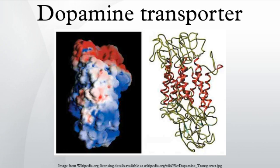DAT is also the target of several DAT releasers and DAT blockers, including amphetamine and cocaine. These chemicals inhibit the action of DAT and, to a lesser extent, the other monoamine transporters, but their effects are mediated by separate mechanisms. Cocaine blocks DAT by binding directly to the transporter and reducing the rate of transport. In contrast, amphetamine enters the presynaptic neuron directly through the neuronal membrane or through DAT, competing for reuptake with dopamine.